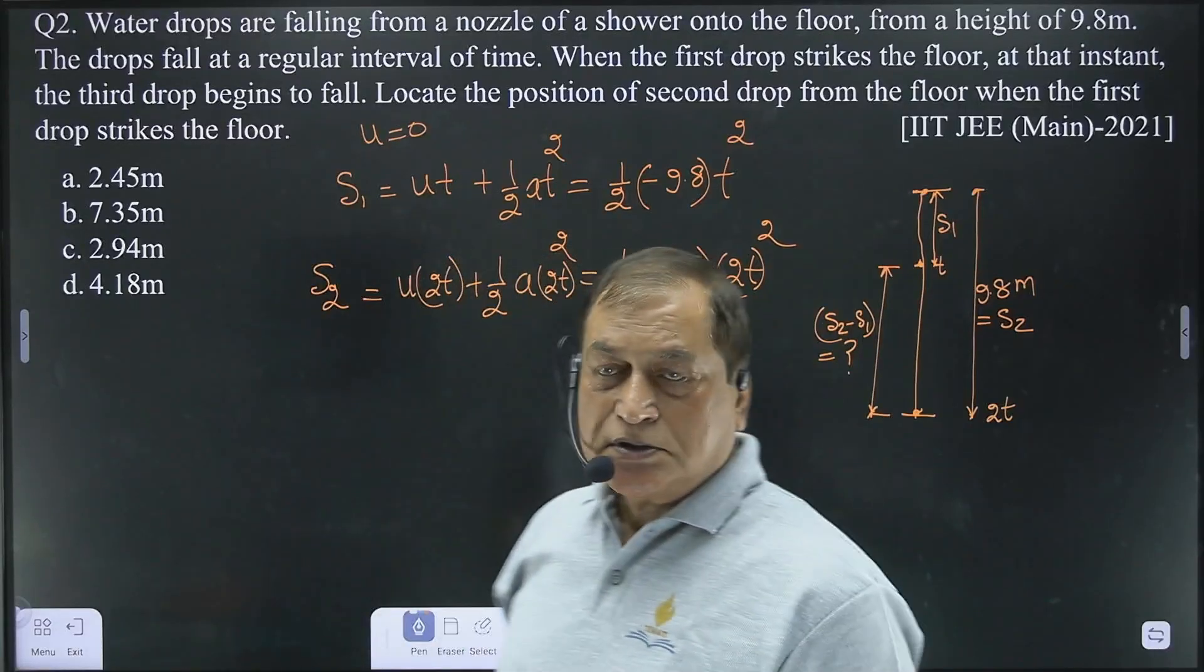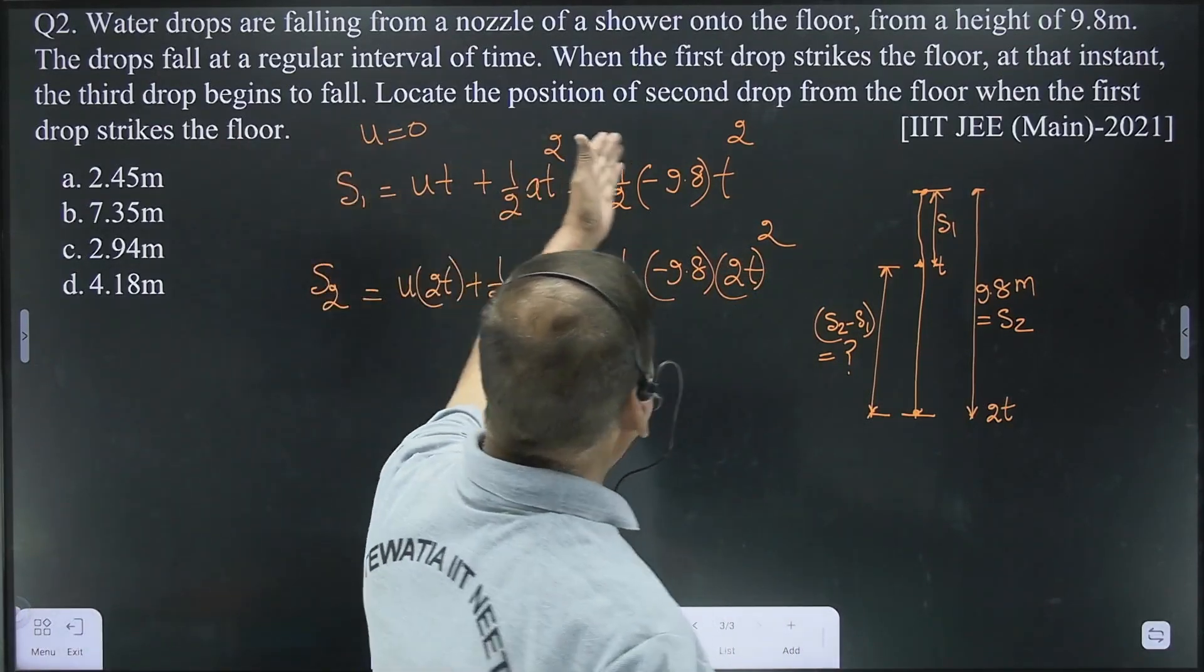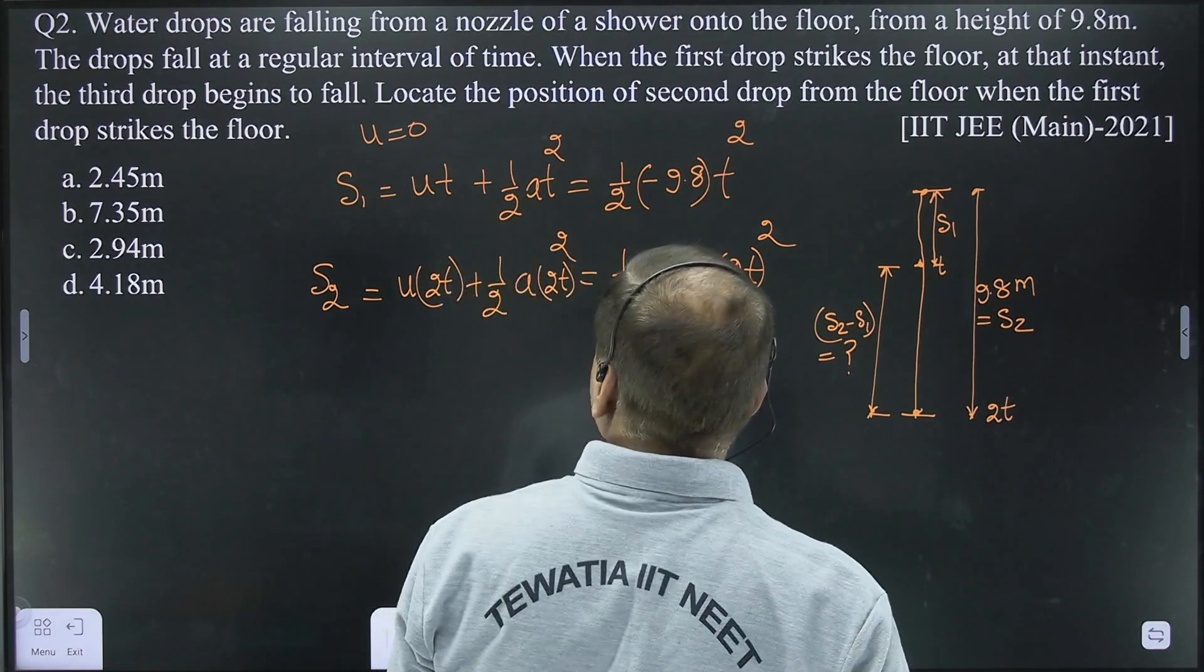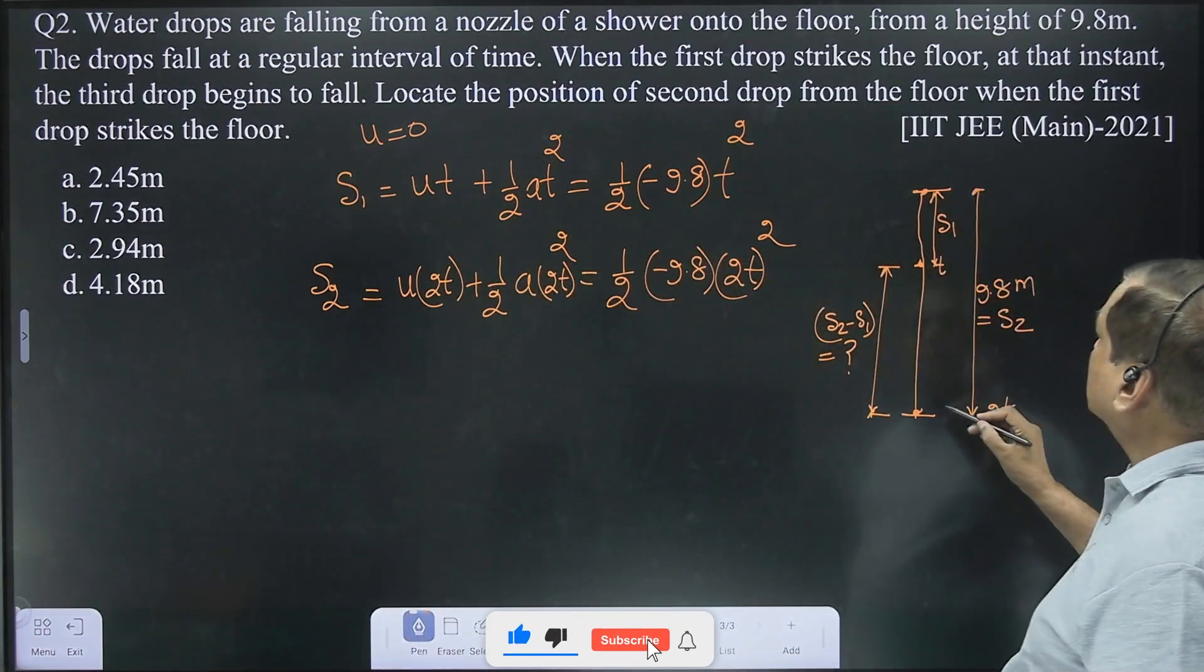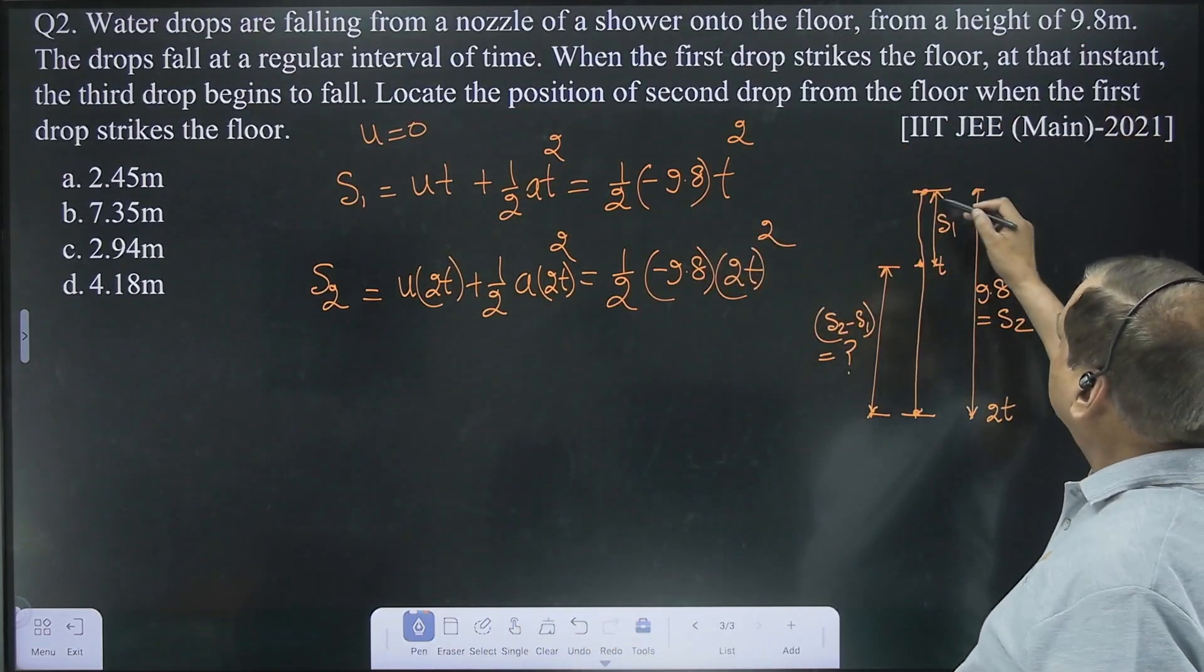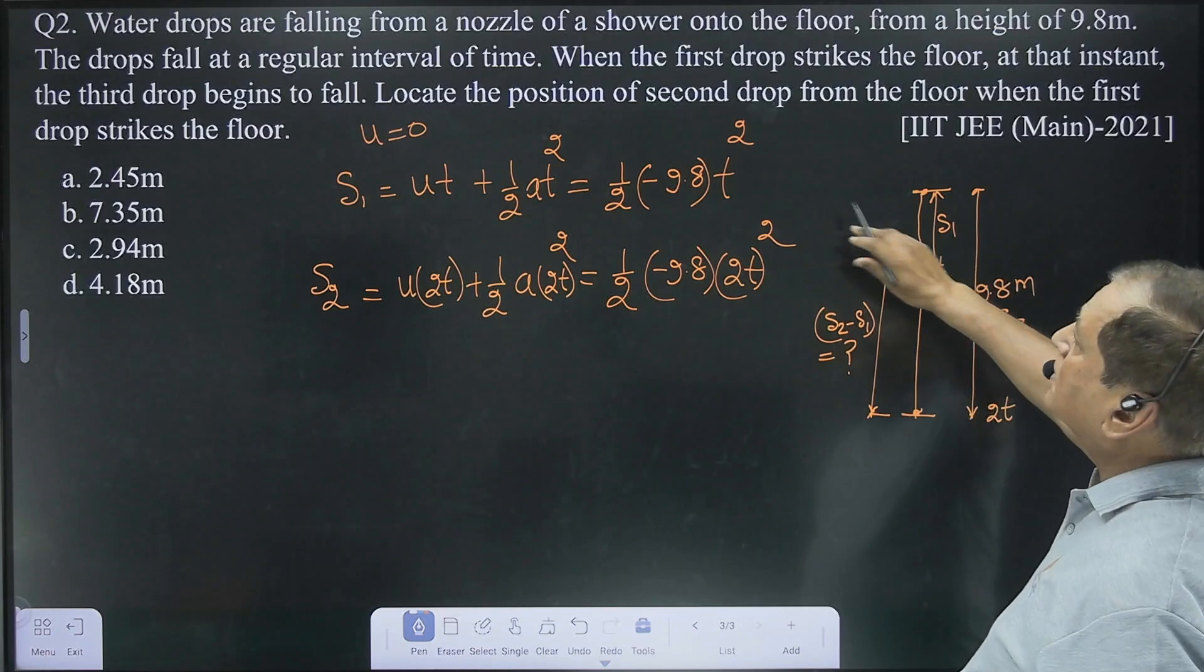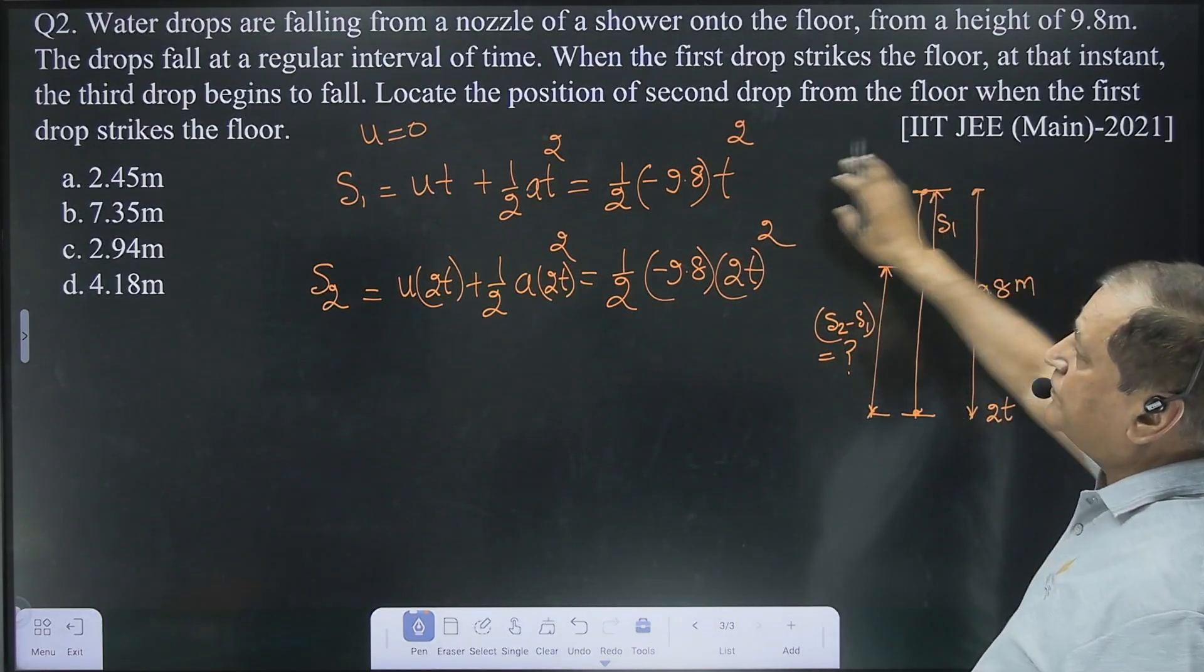Hello students, this is another numerical. The water drops are falling from a nozzle of a shower onto the floor from a height of 9.8 meter. The drops fall at a regular interval of time. When the first drop strikes the ground, at that instant the third drop is about to fall. Locate the position of second drop from the floor when the first drop strikes the ground.